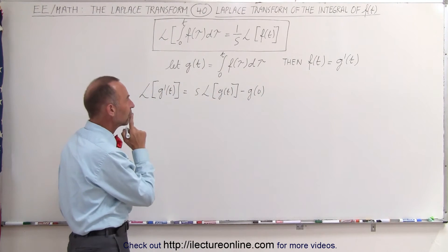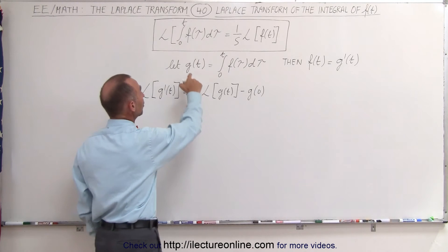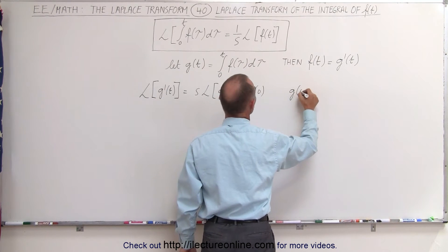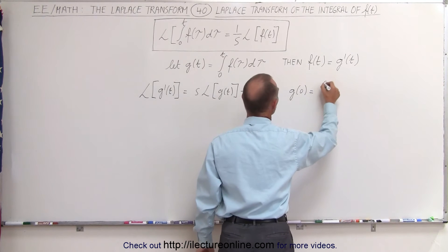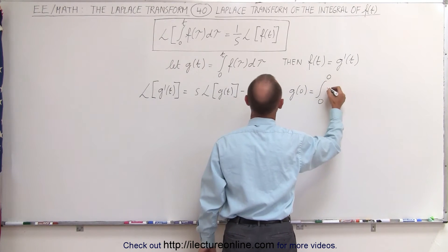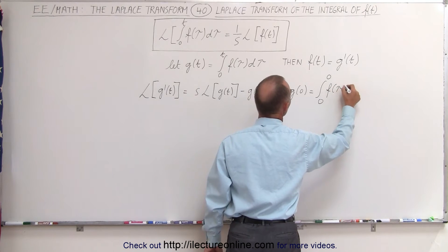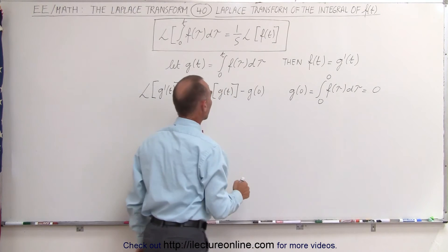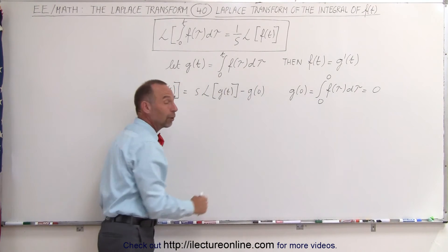What is the function evaluated at zero? If g(t) equals this, then g(0) equals the integral from 0 to t, but since t is zero, from 0 to 0 of f(tau)d(tau), which equals zero. This means this portion of the equation goes to zero.